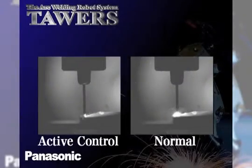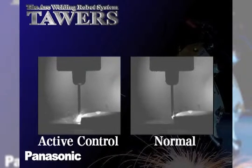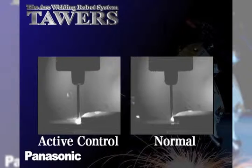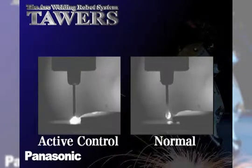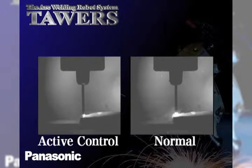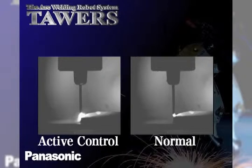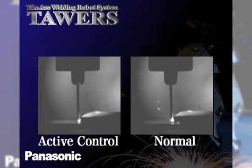Conventional welding processes are limited in the fact that while they do have the ability to make good welds, the process window that they offer good results in can sometimes be limiting. Variations like tip-to-work distance or variation in torch angle can sometimes determine the success or failure of the process.